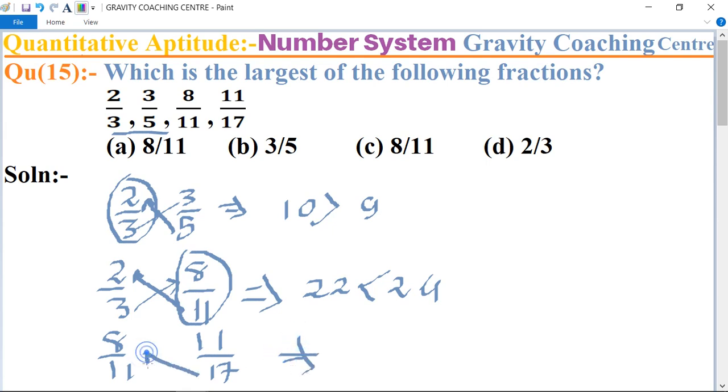First 8 into 17 equals 136 and 11 into 11 is 121. So here 136 is the greater, so 8 upon 11 is the larger fraction.